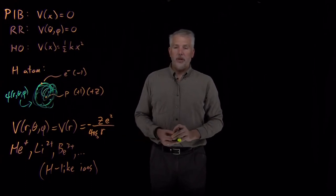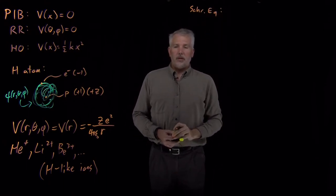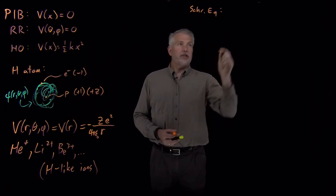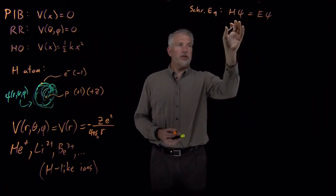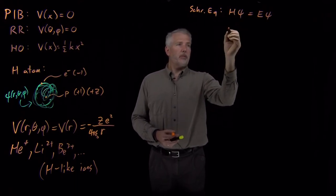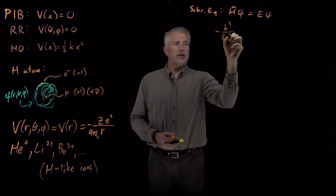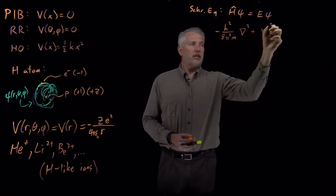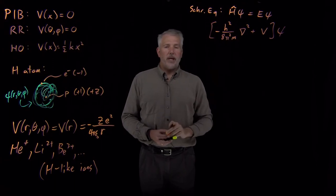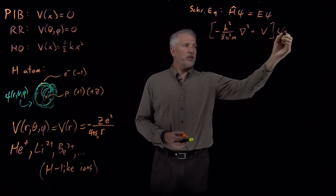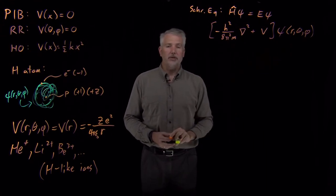This is our expression for the potential energy. We can use it in the Schrödinger equation to find the equation we'll need to solve for the wave function of the electrons in the hydrogen atom. Schrödinger's equation is Ĥψ = Eψ. The Hamiltonian operator is −h² / (8π²m) · ∇² plus the potential energy, times the wave function. We're going to solve for the wave function as a function of R, θ, and φ — the three-dimensional spherical polar coordinates.